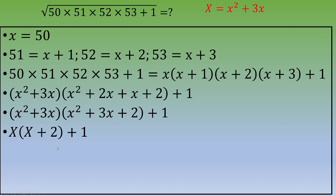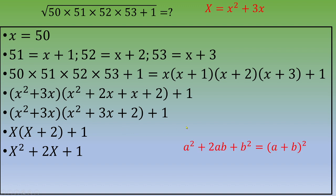Distributing gives capital X squared plus 2 capital X plus 1. At this stage, you recognize the remarkable identity a squared plus 2ab plus b squared equals (a+b) squared. So the quantity under the root can be written as (capital X plus 1) squared.